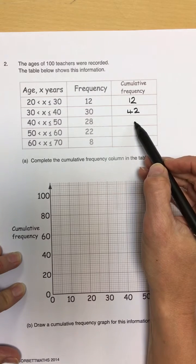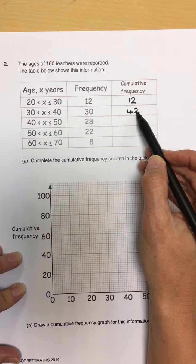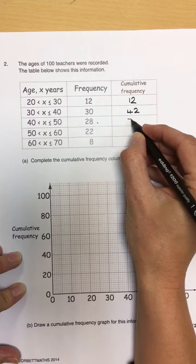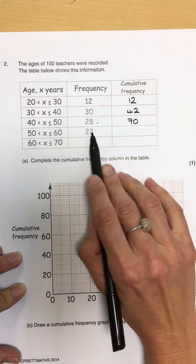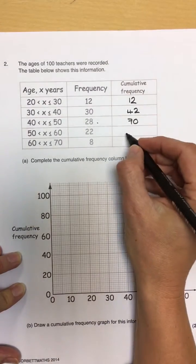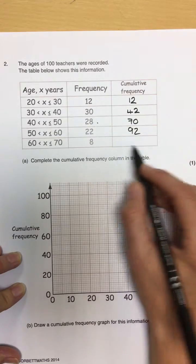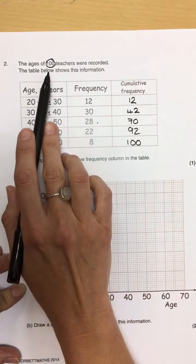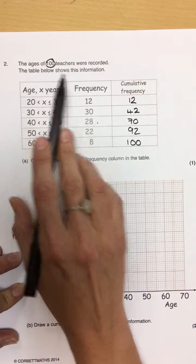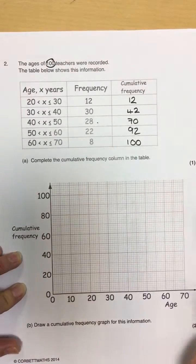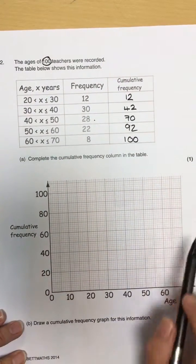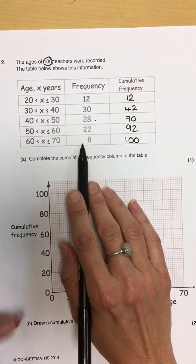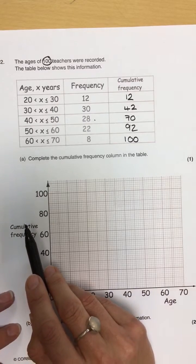Then we move down to this column, and we need to do the total from the previous, plus the new frequency. So that is 70, and then 70 plus the new one is 92, and then 92 plus the 8 should bring you back to what they are telling you the total number for your table is. So, 100. Now, that's one mark for completing the extra column, the cumulative frequency column, on your grouped frequency table.